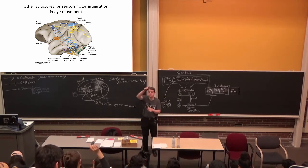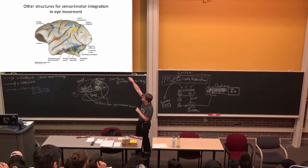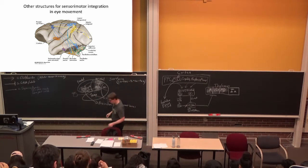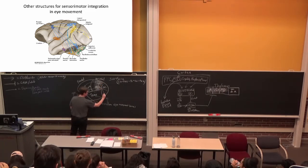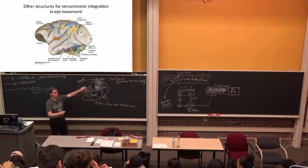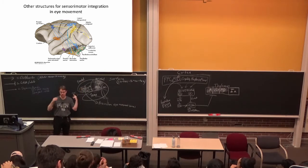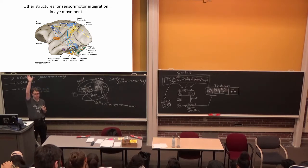LIP projects back down to the superior colliculus, so in that sense that would be the conscious eye movement pathway that bypasses the frontal eye fields. So it's kind of both conscious and reflexive, depending on where the signal originates.